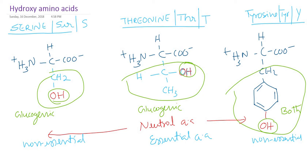Regarding polarity, both serine and threonine are polar amino acids — you can see they contain hydroxyl groups. These hydroxyl groups can form hydrogen bonds with water, so they are hydrophilic. Tyrosine, however, because of its benzene ring, is a non-polar amino acid. Even though it contains a hydroxyl group, the bulky benzene ring makes it non-polar or hydrophobic.